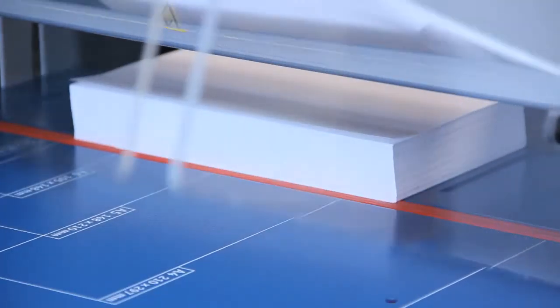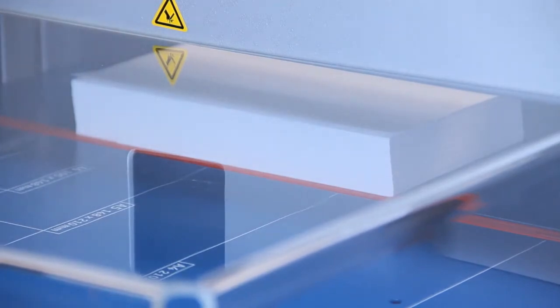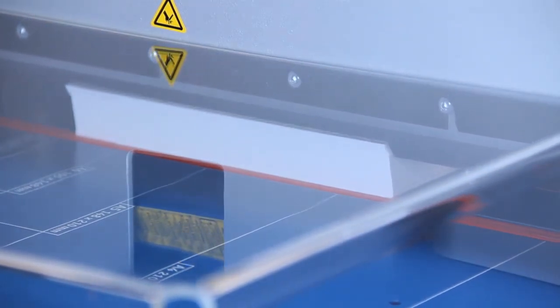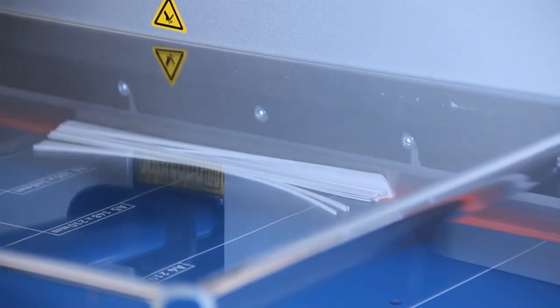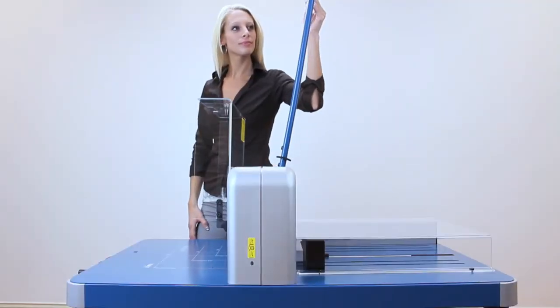But if for some reason the paper was not aligned correctly, don't worry. This cutter can cleanly remove a sliver of paper from all 700 sheets. Like all DALI products, safety is at the forefront of design.